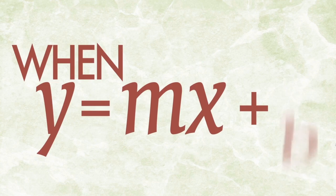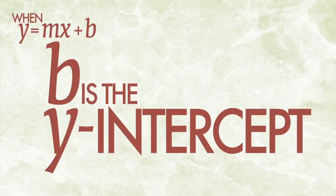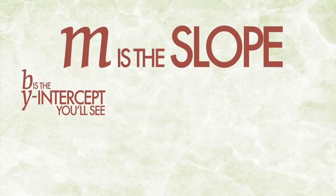When Y equals MX plus B, B is the Y-intercept you'll see, M is the slope rise over run. Then wait until we stop but the day will never come.